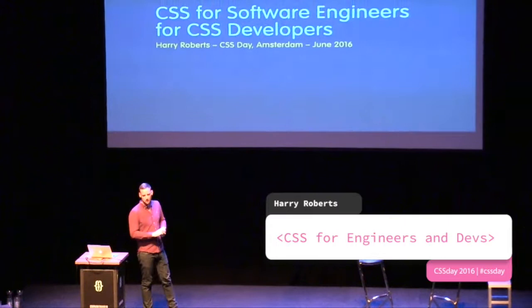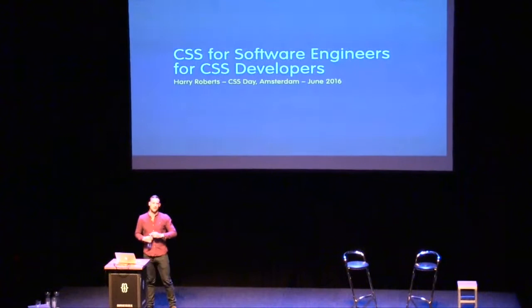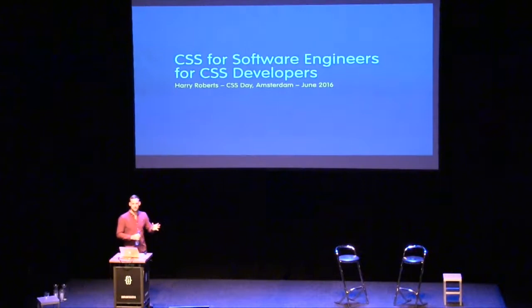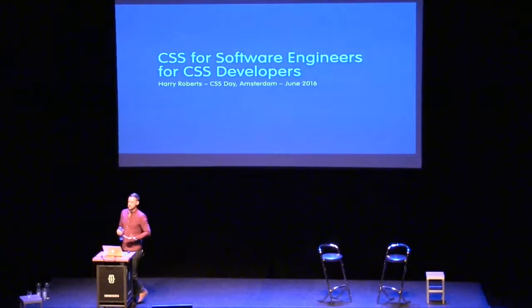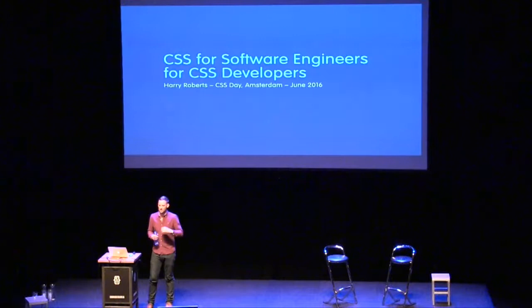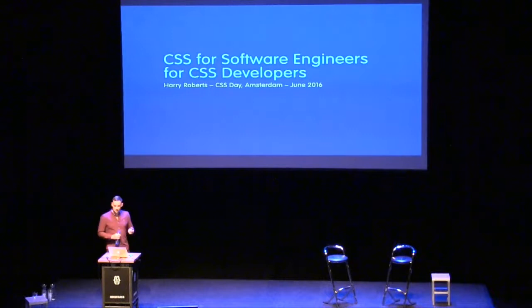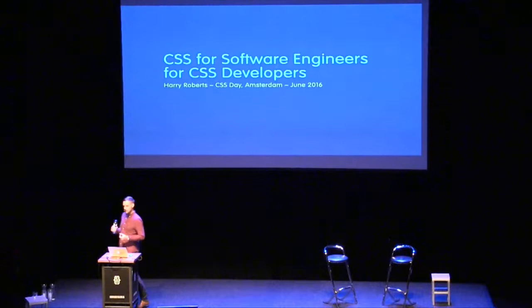CSS for Software Engineers for CSS Developers — kind of a weird recursive title. Basically we're going to be looking at traditional computer science paradigms, principles, and design patterns, and how we can apply them either directly or indirectly to CSS, so writing CSS from the point of view of a very traditional computer science developer, and recycling that work so that we as front-end developers are a lot more pragmatic, working quicker, more effectively and efficiently.